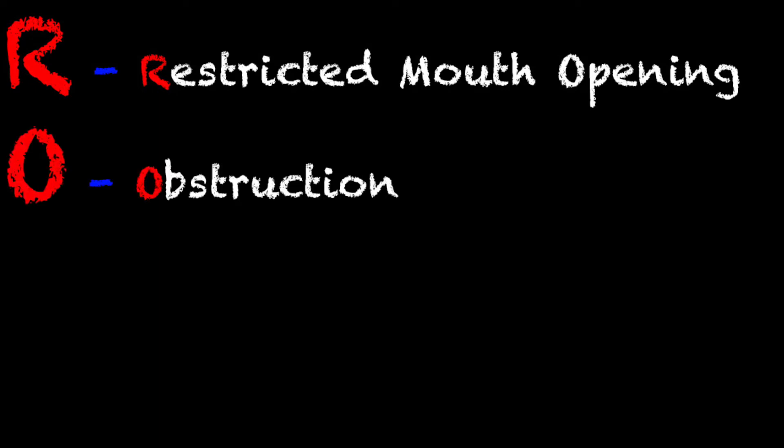The next is obstruction. Obstruction isn't just what we automatically think of, which is maybe that the patient choked on something. It could be their teeth, it could be vomit in the airway — anything that can prevent us from placing that device, any foreign body in the mouth, is an obstruction. This can even include their tongue. Let's say they're experiencing angioedema or something like that — that counts as an obstruction as well.